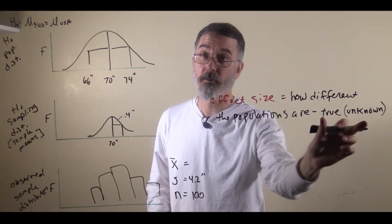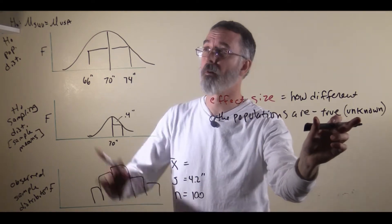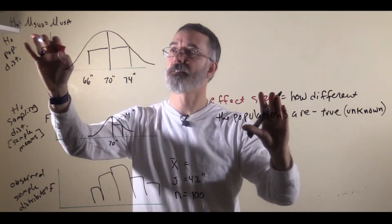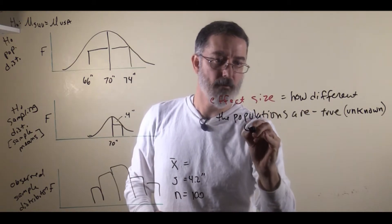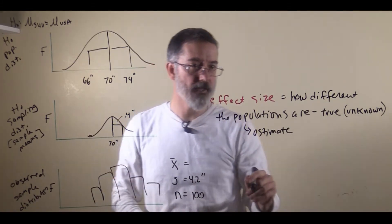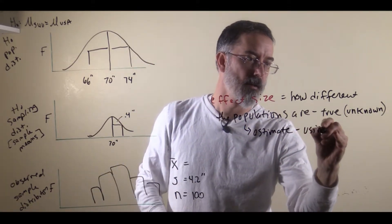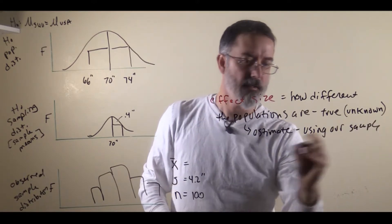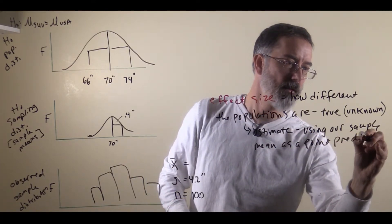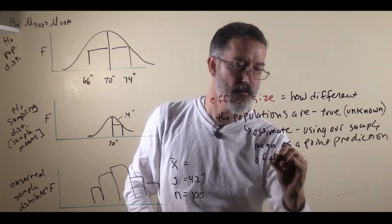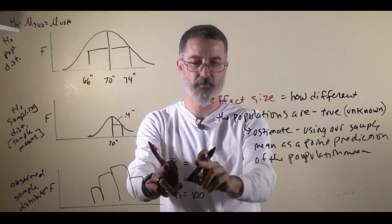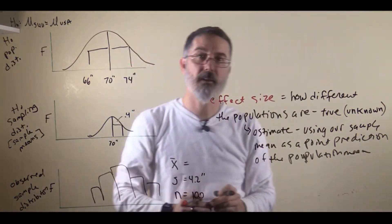If you knew that difference, usually you would not even need to do your research, because our research is really often about whether or not they are exactly the same, rather than how different they are. We usually do not know the real difference between SUU men's heights and American men's heights. But what we can do is estimate the difference in their heights, and we do that by using our sample mean as a point prediction of the population mean.